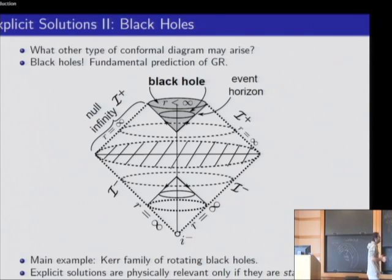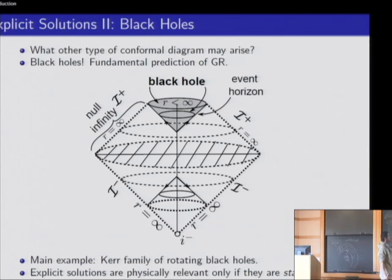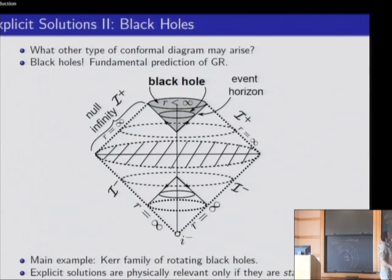Black holes are fundamental in mathematics, physics, astronomy, and astrophysics. We want to understand the analytical and geometric properties of these regions. The best way is to look at explicit solutions of the Einstein equations which contain such black hole regions, and it turns out that such explicit solutions exist. Their existence is one of the fundamental predictions of general relativity.